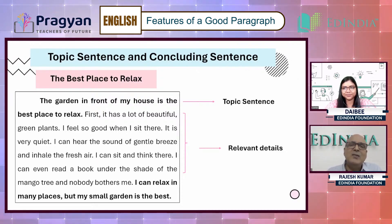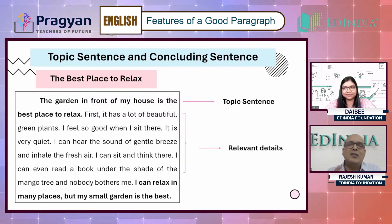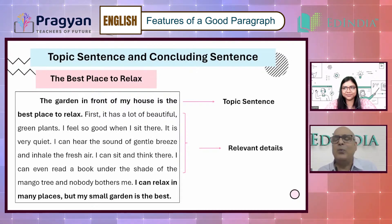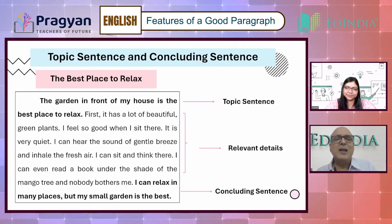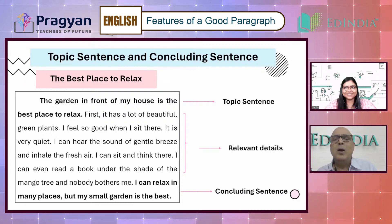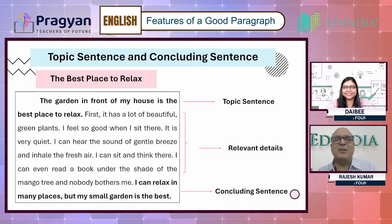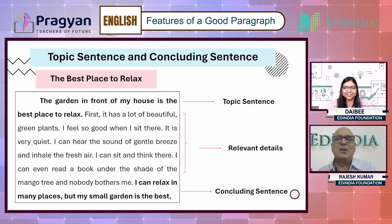What he has said in the first sentence is the crux, the bone of the issue. Around that are the details, and then finally in the last sentence he is saying: I can relax in many places — it's not that I only relax in my garden — but this small garden of mine that I'm talking about is the best. So again it connects with the title or the topic sentence.